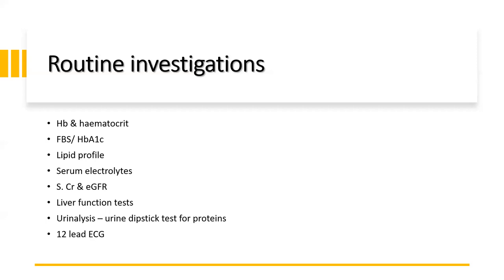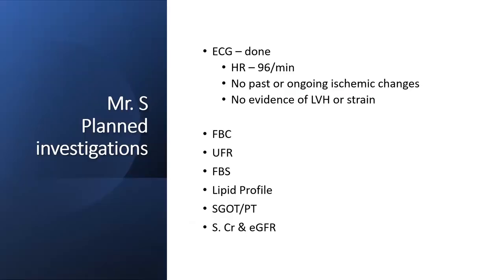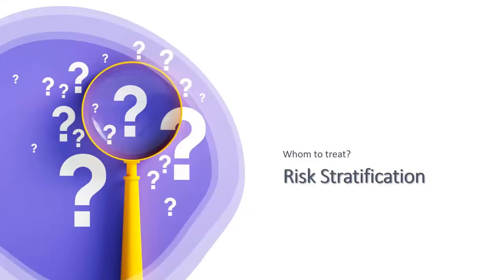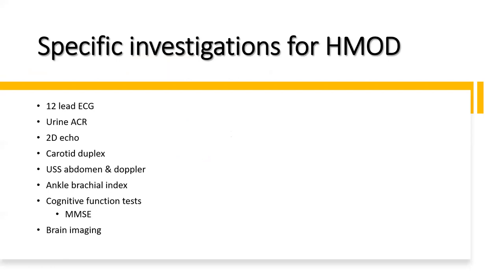In summary, Mr. S is a 42-year-old male carpenter with newly diagnosed hypertension incidentally found during presentation with burning chest pain for three weeks due to gastroesophageal reflux. His hypertension is uncomplicated with no hypertension-mediated organ damage. Positive risk factors include family history of CVD, smoking, alcohol, Class 1 obesity, and possible obstructive sleep apnea. Work-related stress and mild low mood due to economic instability may be contributing. Investigations planned include FBC, UFR, fasting blood sugar, lipid profile, SGOT, PT, serum creatinine, and estimated GFR.